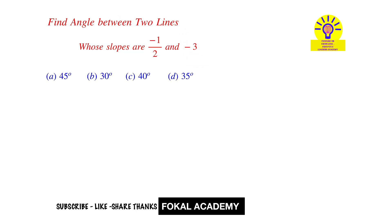Here this is line 1 and this is line 2. The angle is theta. For line 1, the slope is given as minus one-half, and for line 2, the slope is given as minus three. Let's consider this is m1 and this is m2.